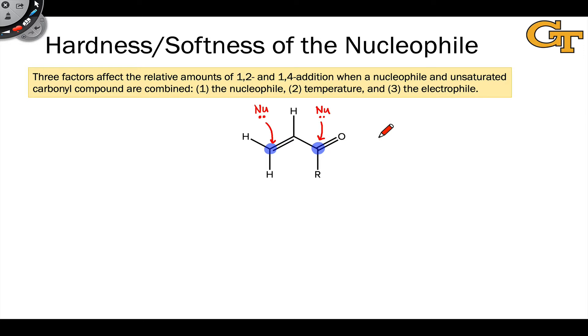We're interested in understanding the factors that lead to these outcomes and to the extent that we can, predicting when direct and conjugate addition will occur given a set of reaction conditions. There are three factors that go into this determination.